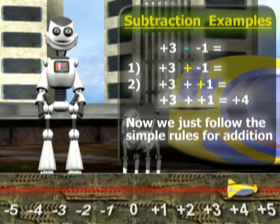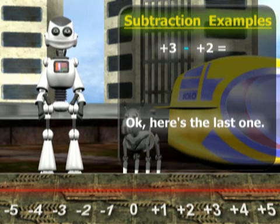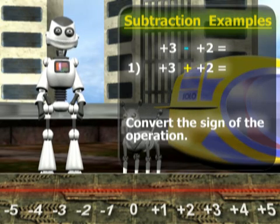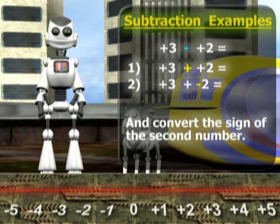Hush, Max. We're almost done. Okay, here's the last one. Convert the sign of the operation. And convert the sign of the second number. We get positive three plus negative two.